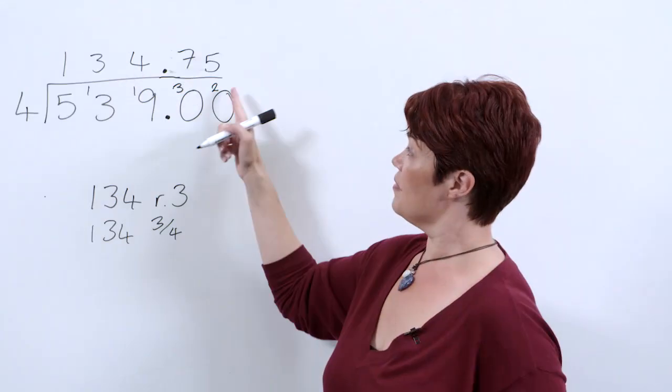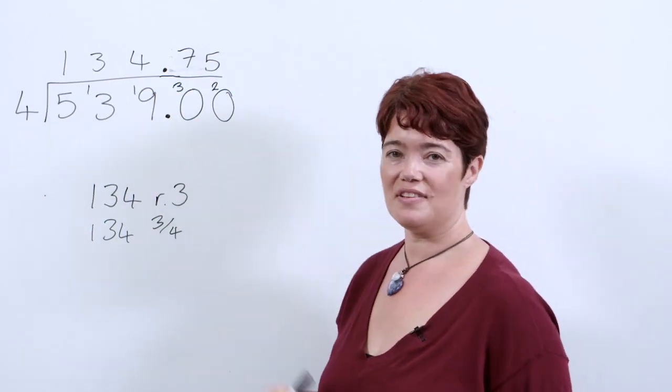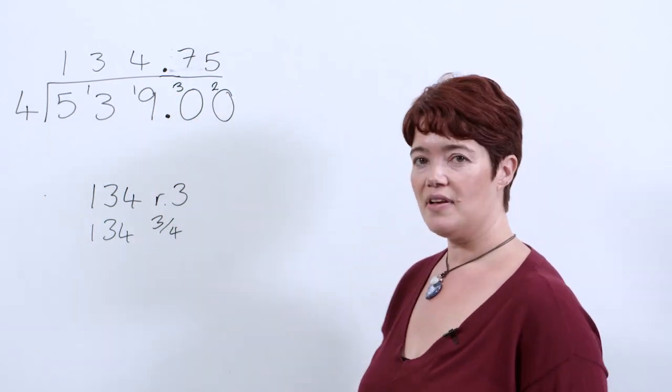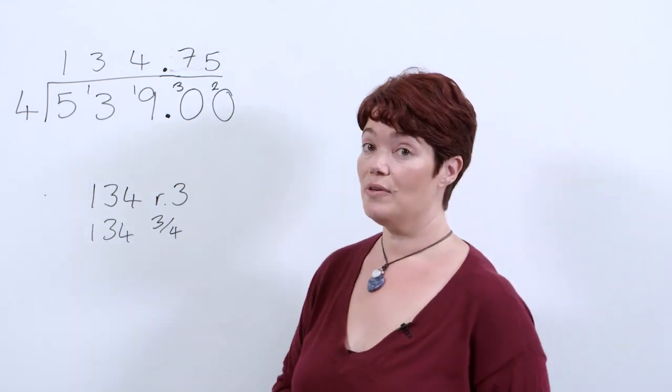Now that is really useful for problems involving money, for example 134 pounds and 75 pence. So there we have it: three different ways of presenting our remainder and the context they might use them in.